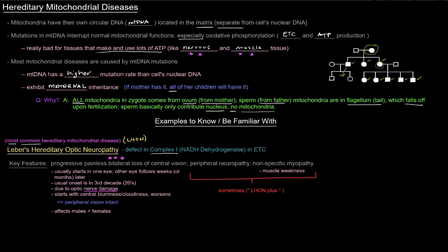This tends to affect males more than females. Sometimes we have a situation called LHON plus, which would include peripheral neuropathy as well as non-specific myopathy, often associated with just muscle weakness. But I mentioned just a moment ago that nervous tissue and muscle tissue use a lot, make and use a lot of ATP.